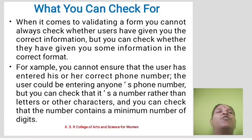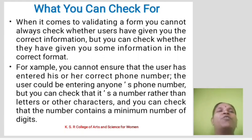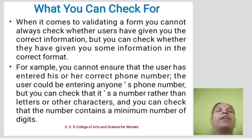What you can check for: When it comes to validating a form, you cannot always check whether users have given you the correct information, but you can check whether they have given you information in the correct format. For example, you cannot ensure that the user entered their correct phone number — the user could be entering anyone's phone number. But you can check that it contains numbers rather than letters or other characters, and that the number contains a minimum number of digits.